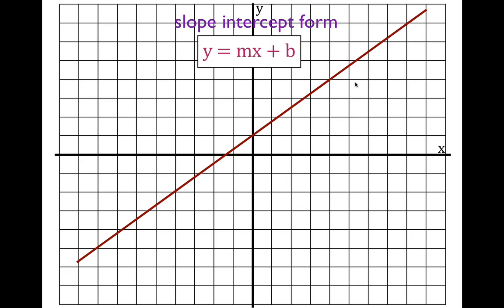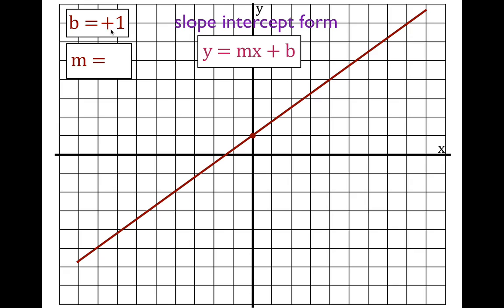The first thing I always tell my students to do: write down b equals, and because we need m, write down m equals. Write them down on a piece of paper so you don't get confused about what is b and what is m. b is the y-intercept — where does this line cross the y-axis? It crosses right there at plus one on the y-axis, so we write down plus one.